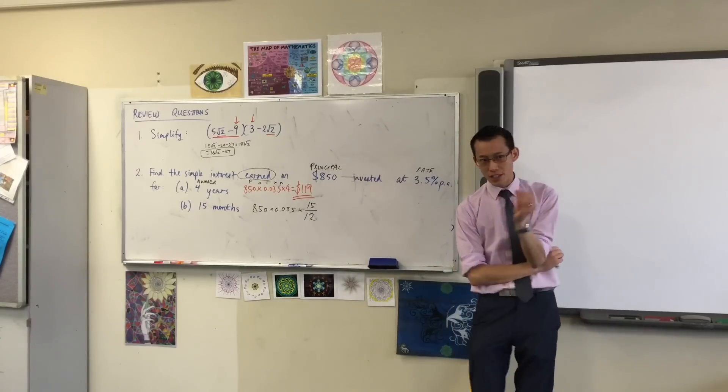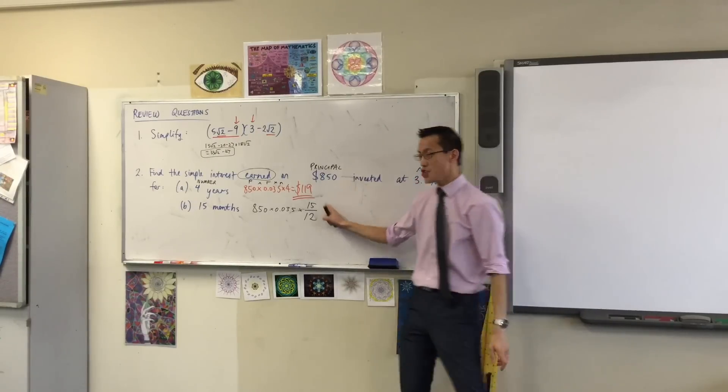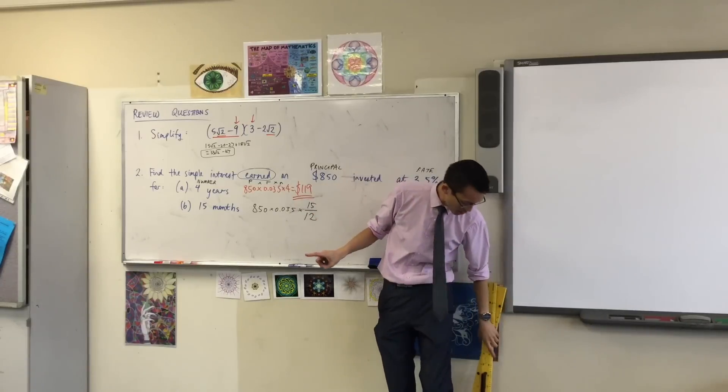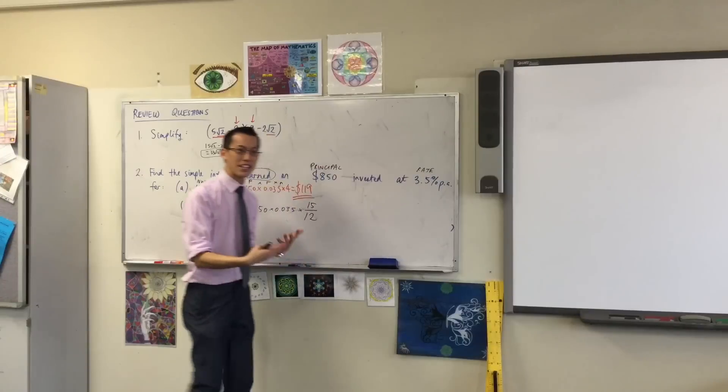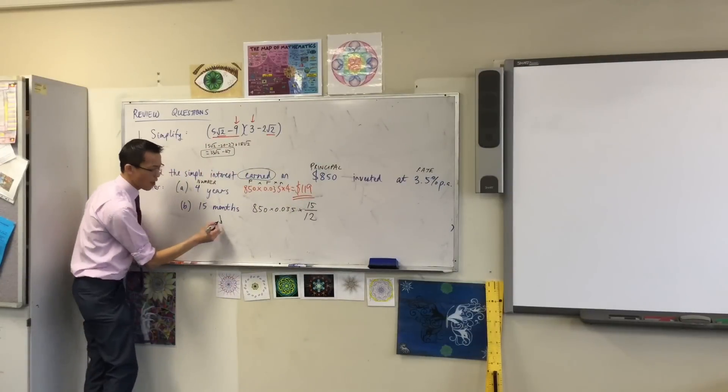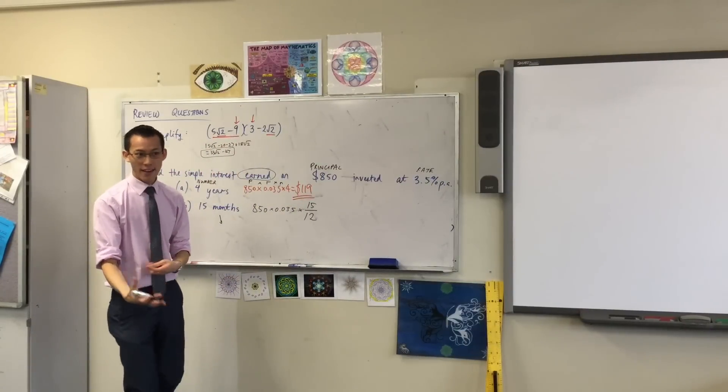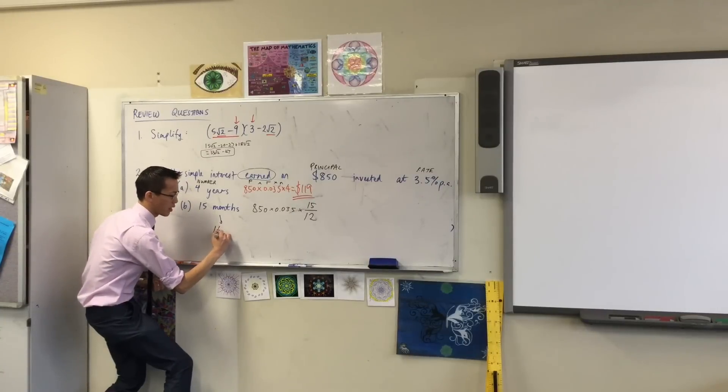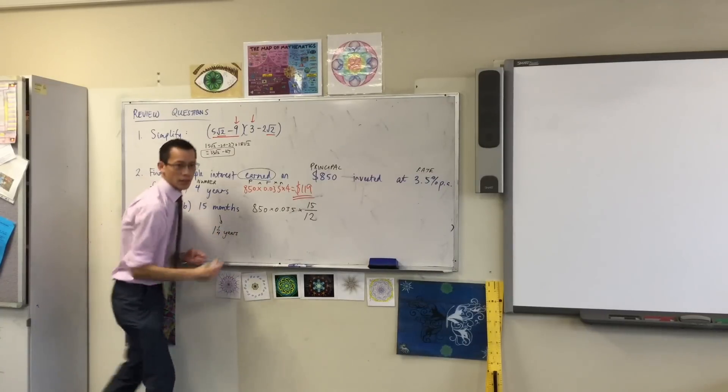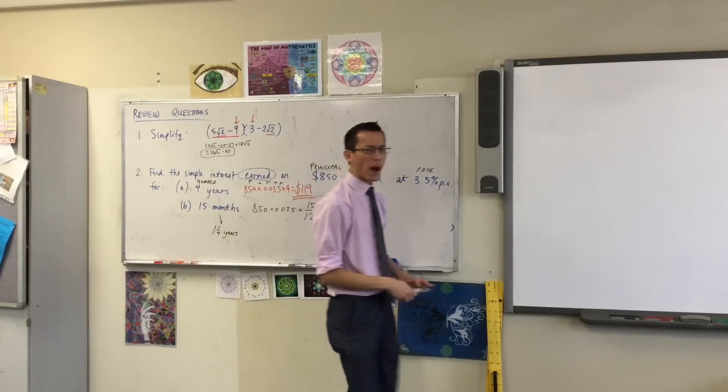Okay, so what you're really doing - that's exactly correct, by the way - you are converting this not from months into some other unit, but you're trying to convert it into years. You want to know how many years are there in 15 months. I think it's one and a quarter years.